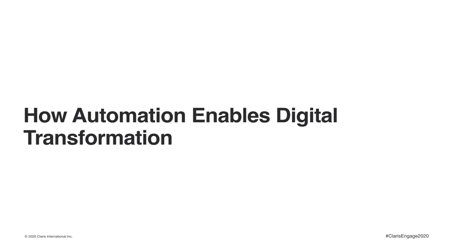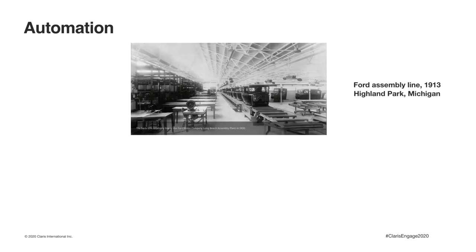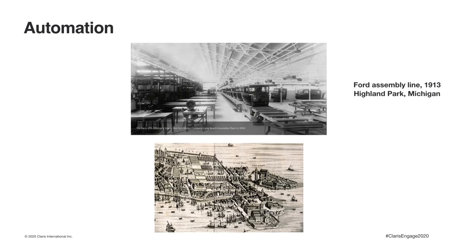Now let's talk specifically about automation and digital transformation. When we think of the history of automation, we often think of the first assembly line — the Ford Motor assembly line built in 1913 in Michigan. However, that's actually not the first assembly line; it's in Venice back in the 1300s to produce ships. Assembly lines are not constructed to produce one of something — they're made to codify best practices and consistency and efficiency across an organization. Like assembly lines, automation enables you to operate at scale. Automation is like creating a digital assembly line, which is what you're ideally doing in your digital transformation.